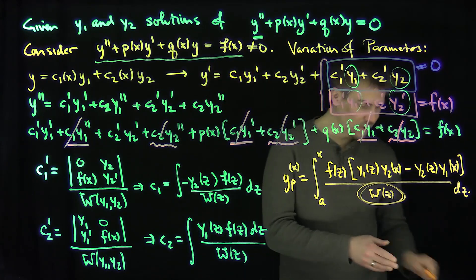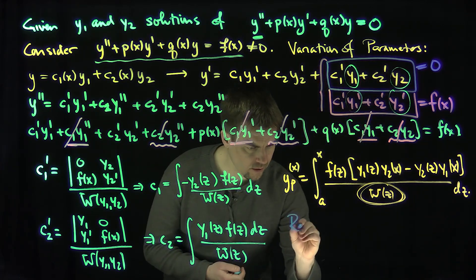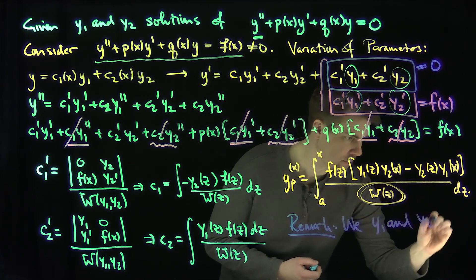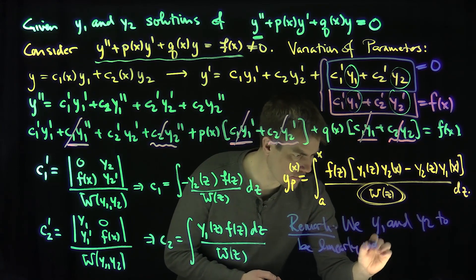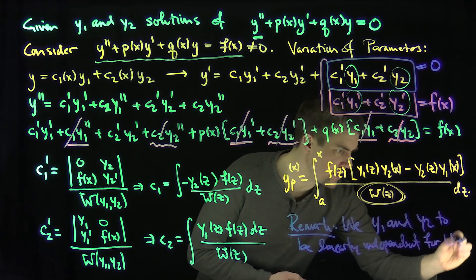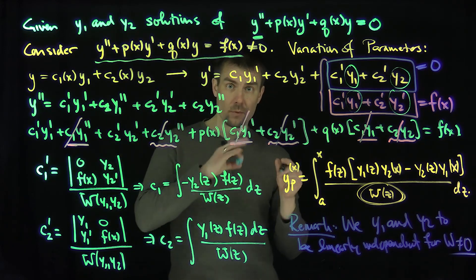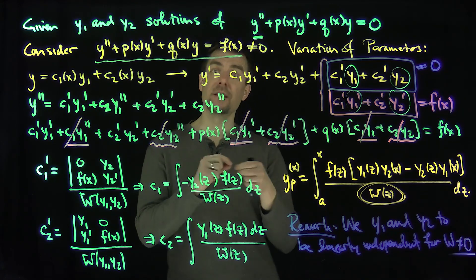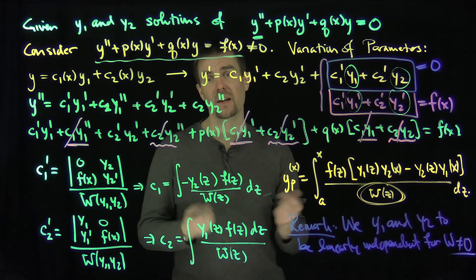This whole method works assuming that y1 and y2 are linearly independent. We need y1 and y2 to be linearly independent for the Wronskian to be nonzero and for this argument to work. We also use Abel's formula: if the Wronskian is nonzero at one point, it is never zero in a nearby interval. So we can apply this method in any interval where the Wronskian is nonzero and y1, y2 are linearly independent. Thank you very much.